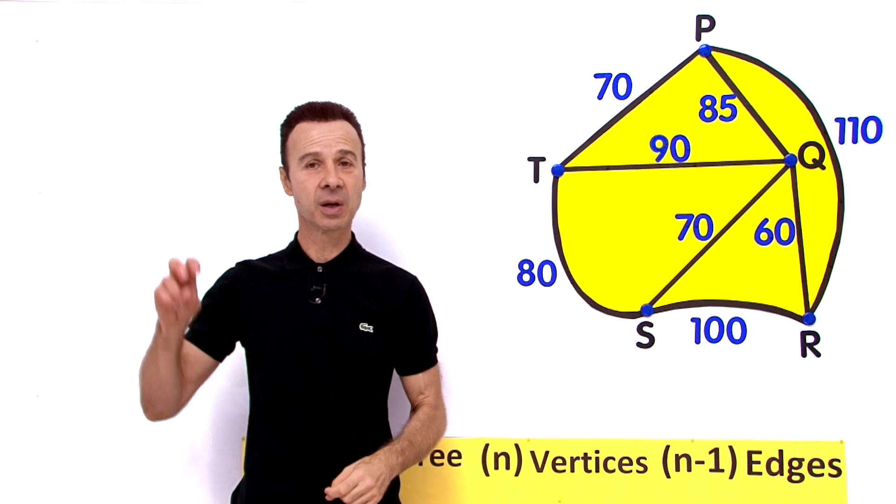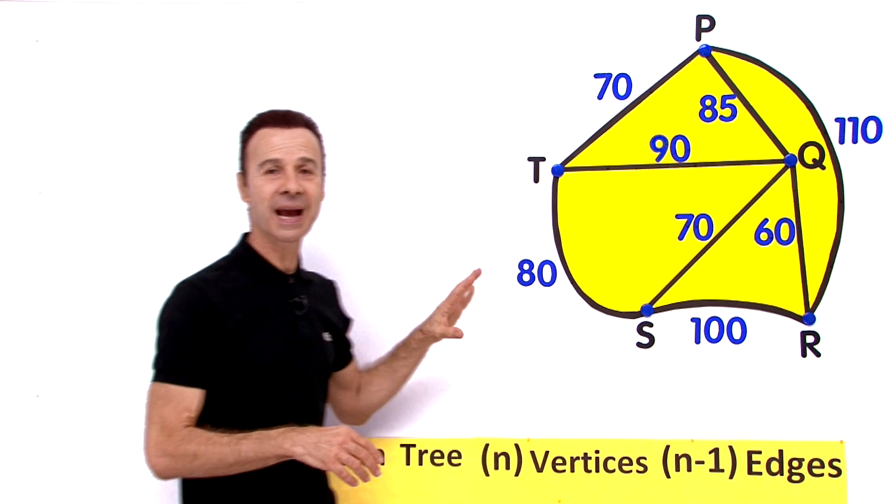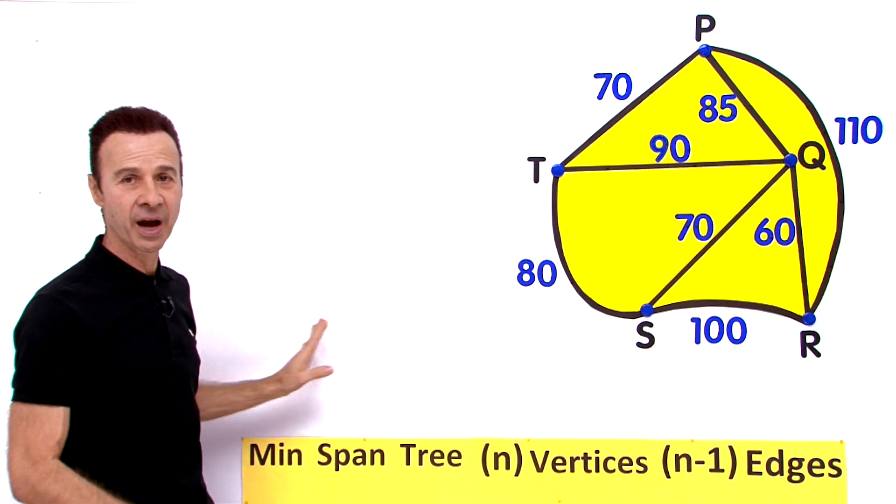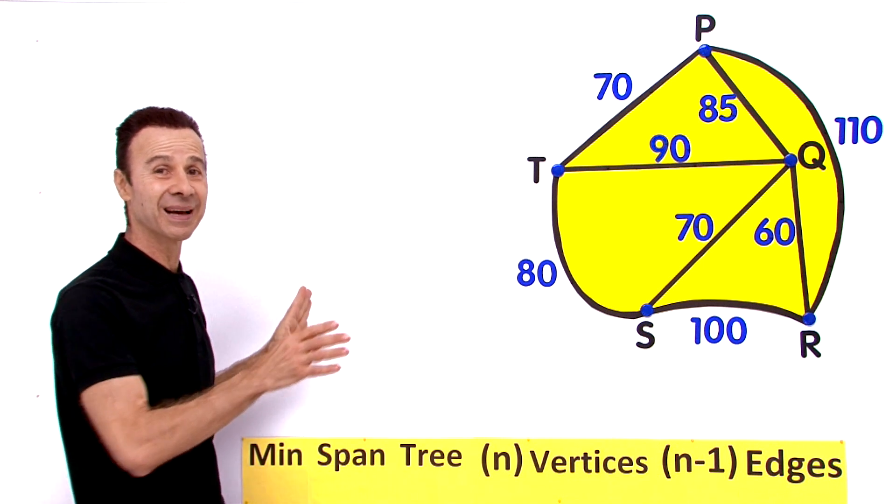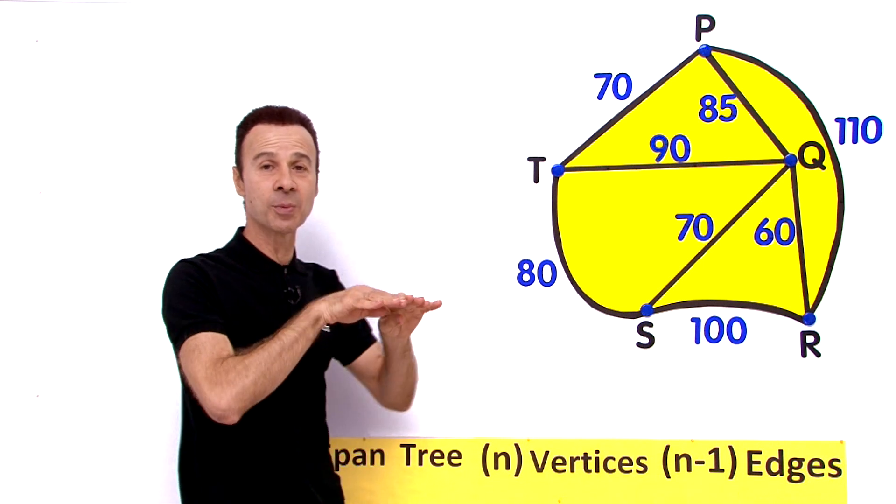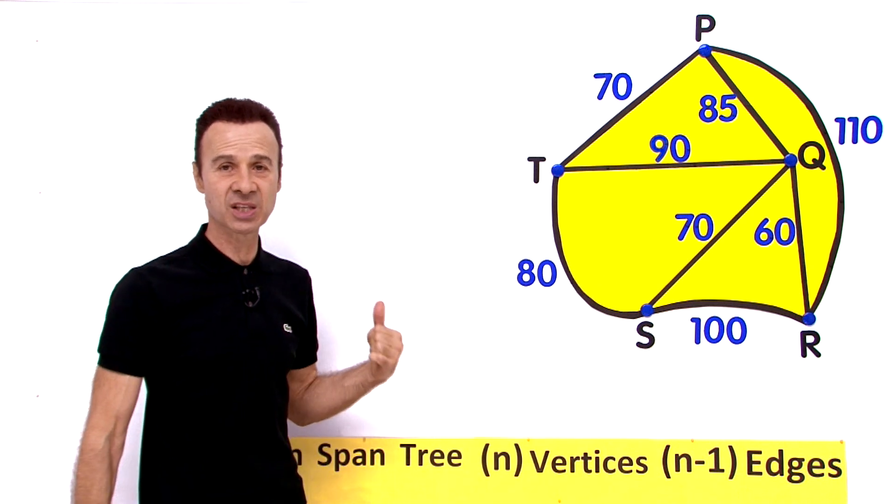In order for us to do this we are going to take it in two steps. Number one, we are going to actually put together and design and draw the minimum spanning tree so it has a certain shape. And number two, then we are going to add all those lengths to determine that minimum length for that spanning tree.